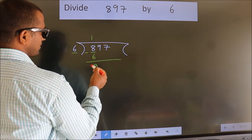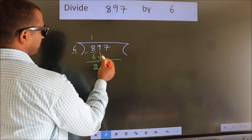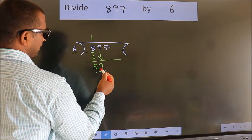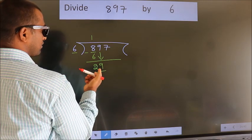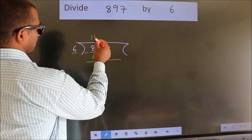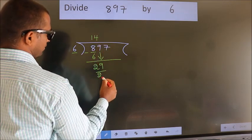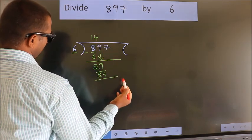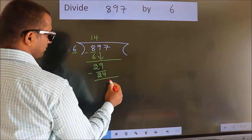After this, bring down the next number. So 9 down. So, 29. A number close to 29 in the 6 table is 6 times 4, which is 24. Now we subtract. We get 5.